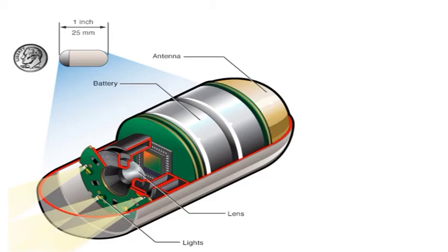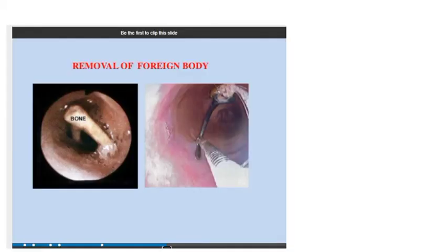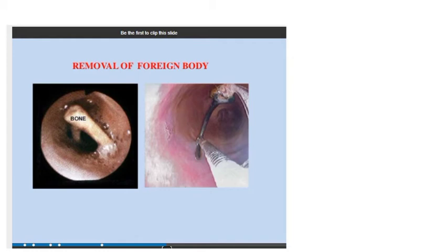Sample images collected using endoscopy include one showing a bone stuck in the throat — bones can become impacted in the flesh of the throat when eating meat, causing extreme discomfort. Another image shows a rigid endoscopy procedure where a special instrument is inserted through the rigid endoscopy tube to access the affected area and pluck out the bone or thorn.